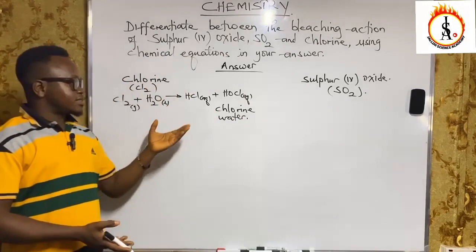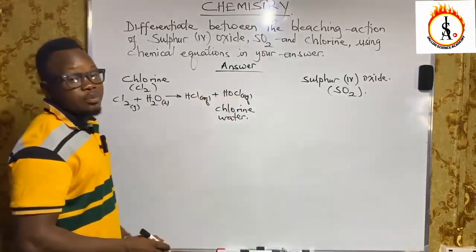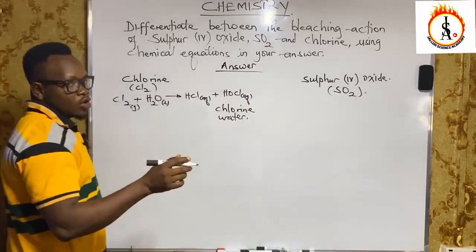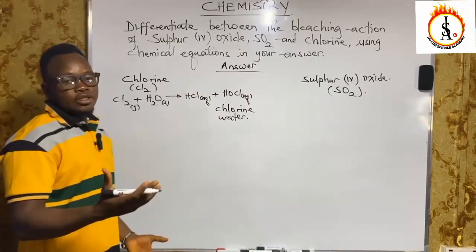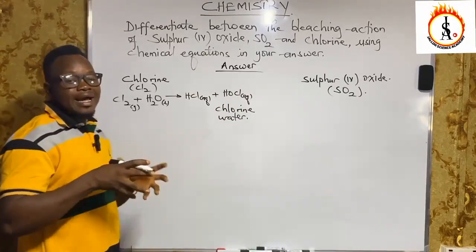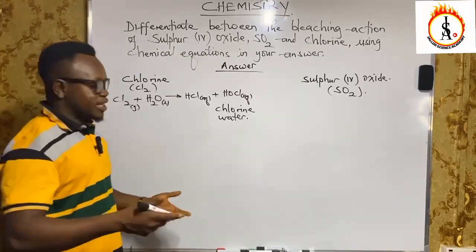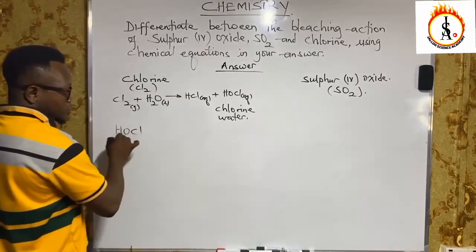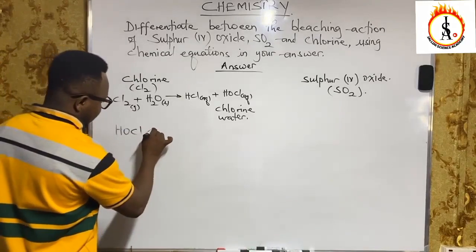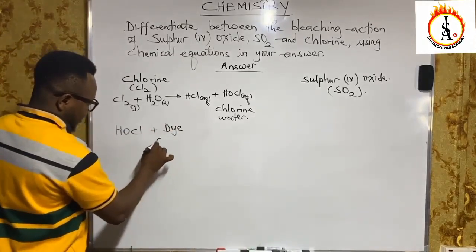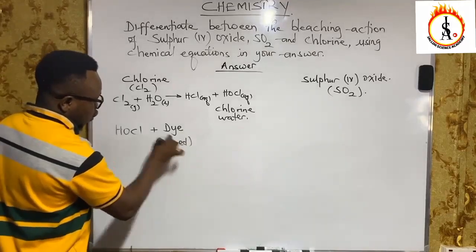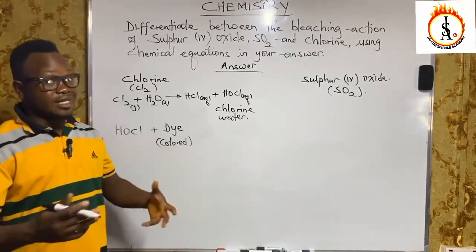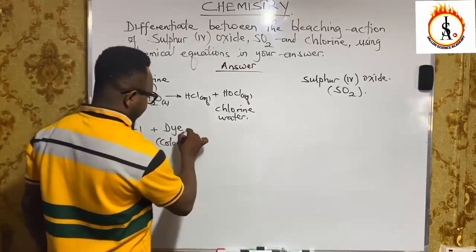The hydrochloric acid is a strong acid, while hypochlorous acid is a weak and unstable compound because of the presence of nascent oxygen. Nascent oxygen means it is an oxygen atom that is highly reactive, which makes the compound unstable. HOCl will then react with a dye — a colored material.